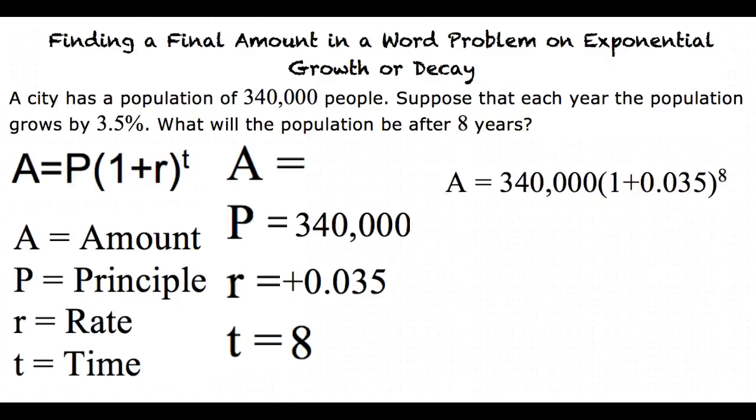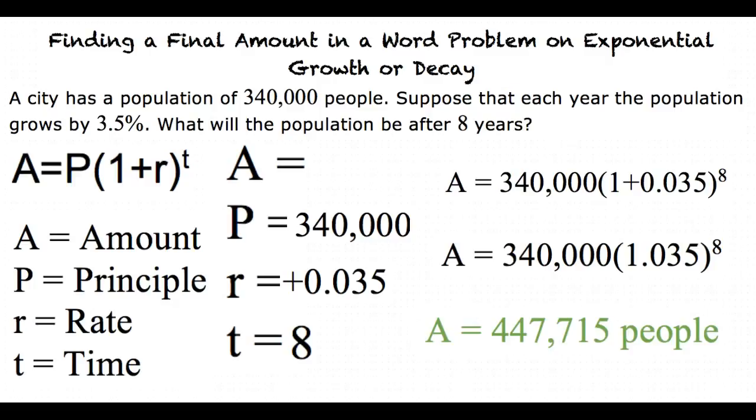This gives us A is equal to 340,000 times 1 plus 0.035 to the 8th power. Now we can use our calculators to solve for A. A is equal to 447,715 people.